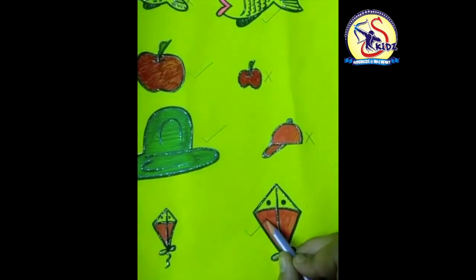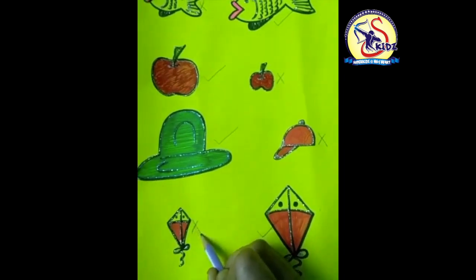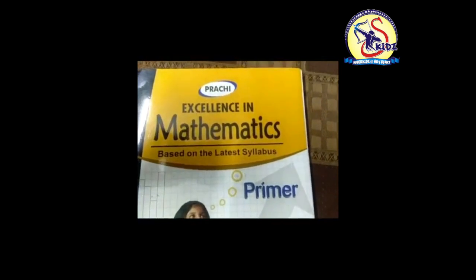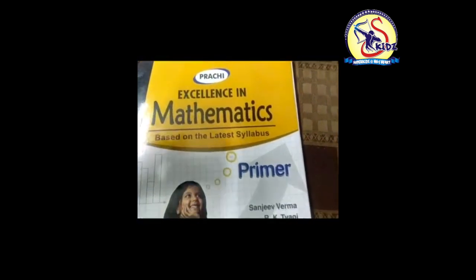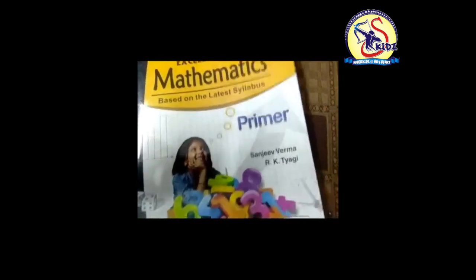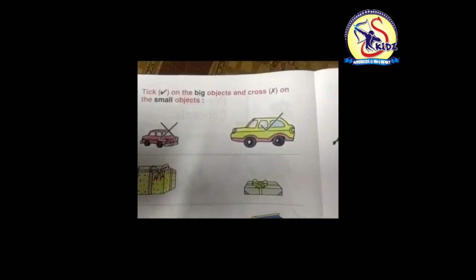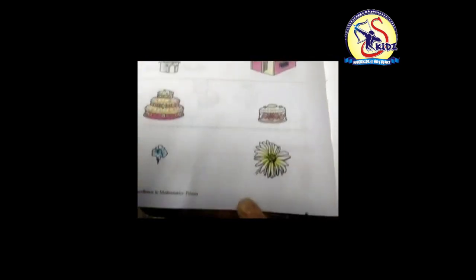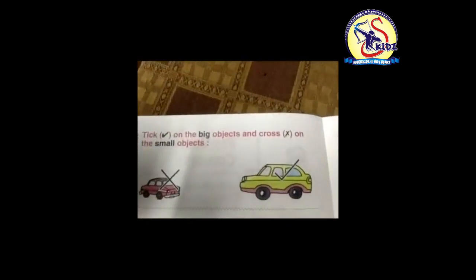This is your maths book — please take out this book, Excellence in Mathematics Primer. Now open page number 8. The name of the exercise is tick on the big object and cross on the small object.